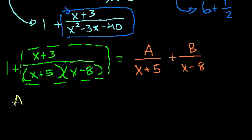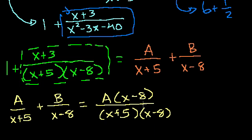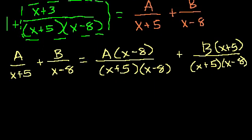So a over x plus 5 plus b over x minus 8 is equal to, let's get the common denominator, it's equal to x plus 5 times x minus 8. And then the a term, a over x plus 5 is the same thing as a times x minus 8 over this whole thing. And then you could add that to b times x plus 5 over x plus 5 times x minus 8. Important to realize that this term is the exact same thing as this term if you just cancel the x minus 8 out. And this term is the exact same thing as this term if you just cancel the x plus 5's out. But now that we have an actual common denominator, we can add them together.